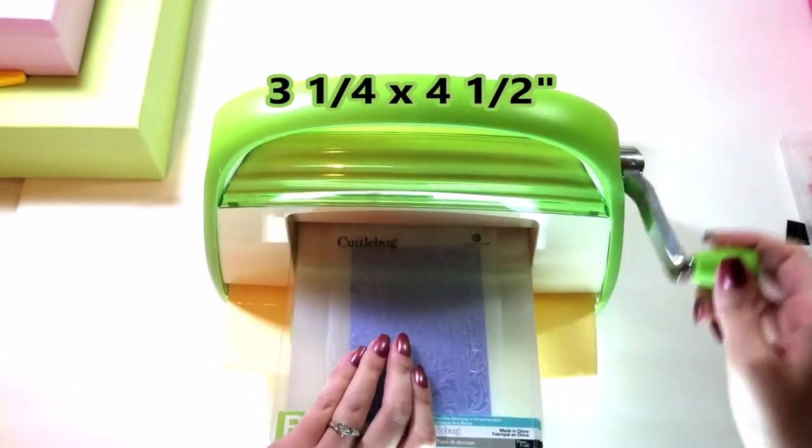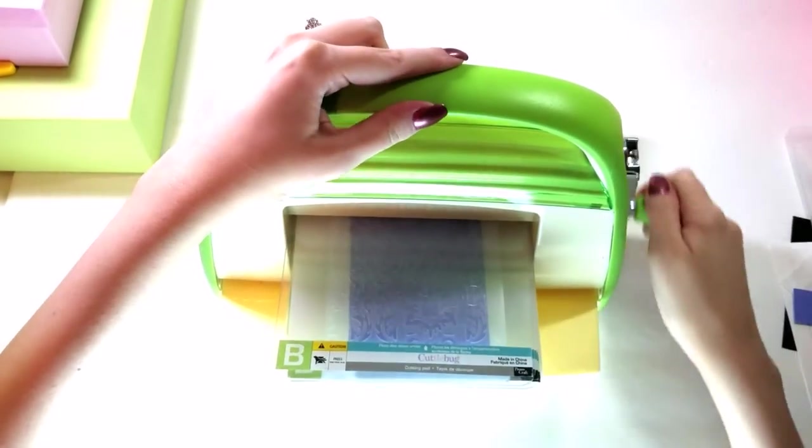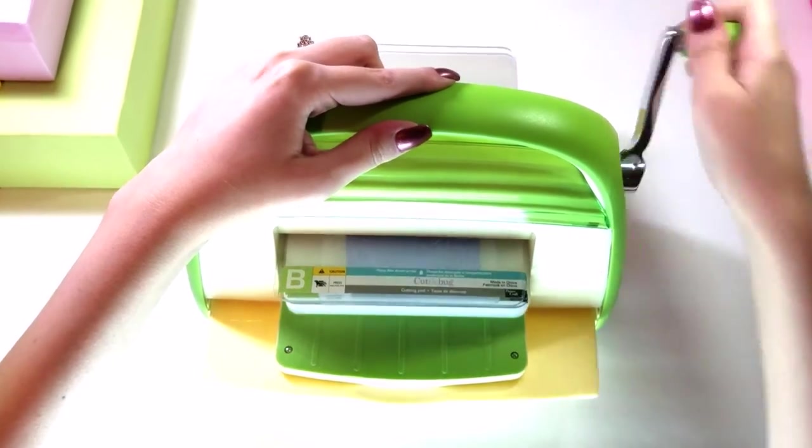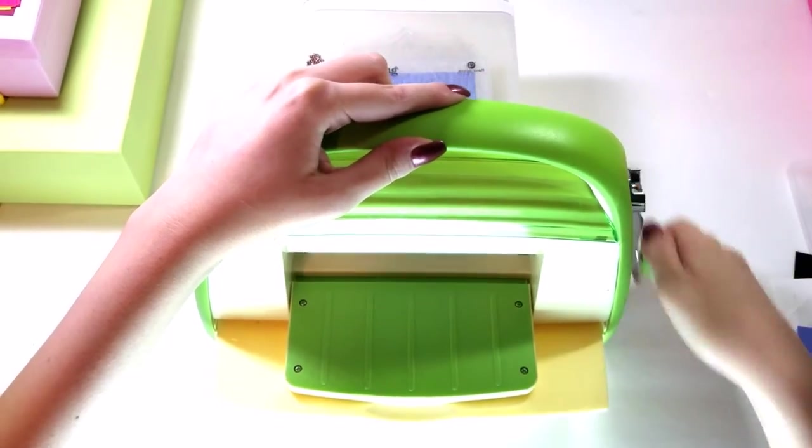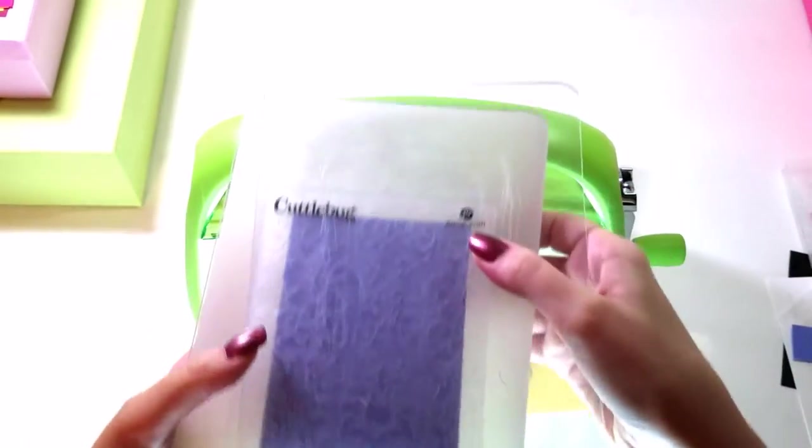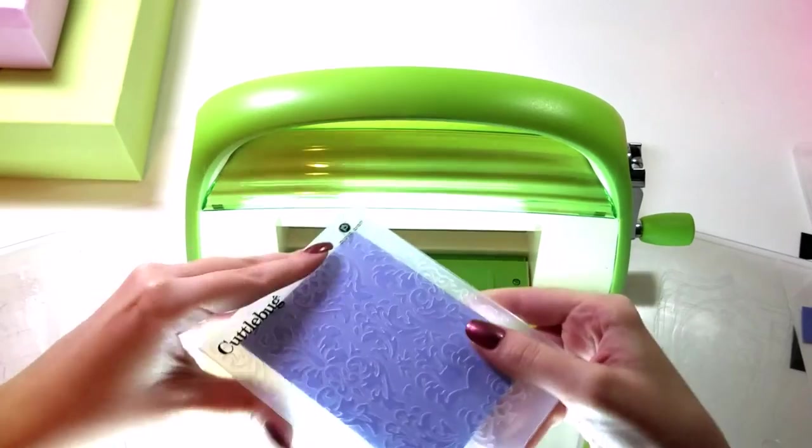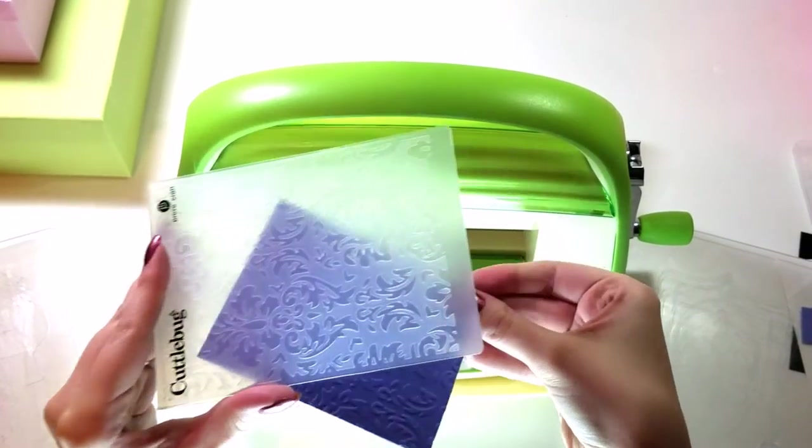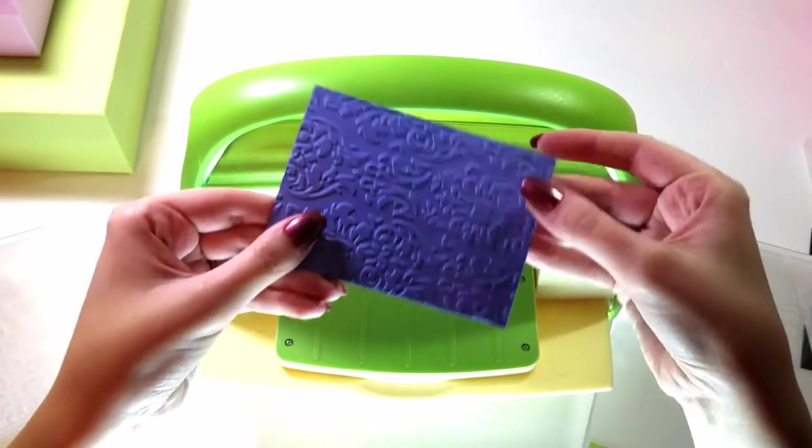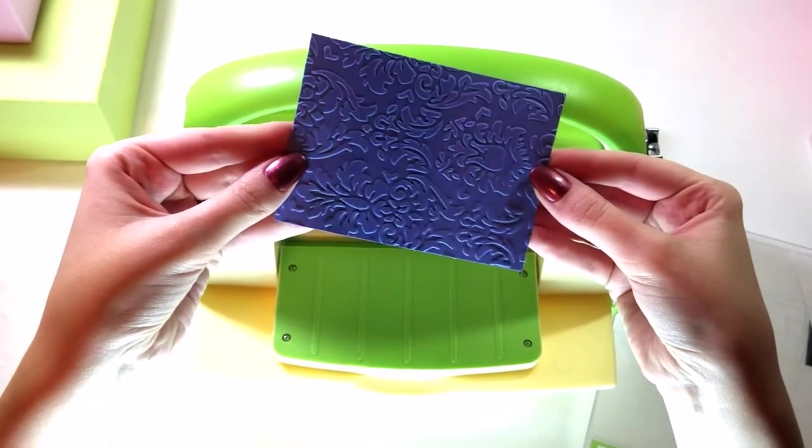This is a three and a quarter by four and a half size sheet of cardstock that I'm running through the Cuddlebug machine, and after I run that through it will imprint that texture on the paper. And you'll see here, when I open the folder it is nice and textured.